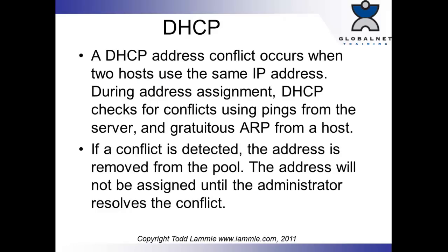DHCP is covered on pages 94 to 96, with detail about the four-way handshake and how to create the pool. I want to bring to your attention conflict resolution. The server pings the address before handing it out to make sure it's not in use — if someone responds, obviously someone's using it. And if a host receives an address from a DHCP server, it uses a gratuitous ARP, basically sending out 'who has the MAC address for this IP address' using its own IP address. If someone responds, it recognizes a duplicate and sends it to the server, which will mark that address as a conflict with an X in the pool.